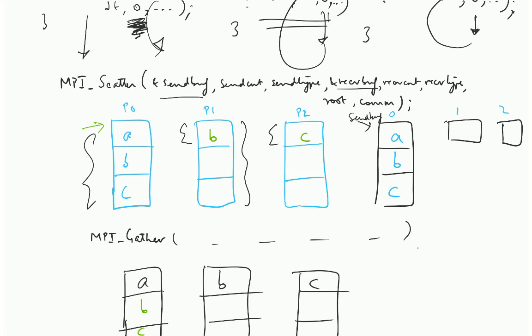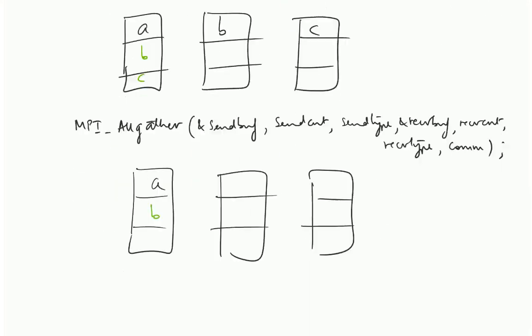And rank 1 and rank 2 will point to their receive buffer, which may not be exactly the same size. At the end, you are going to get B and C over here.